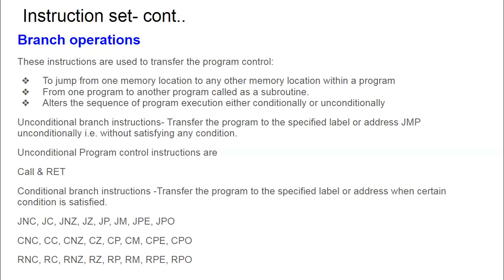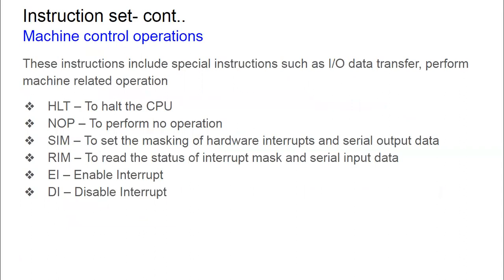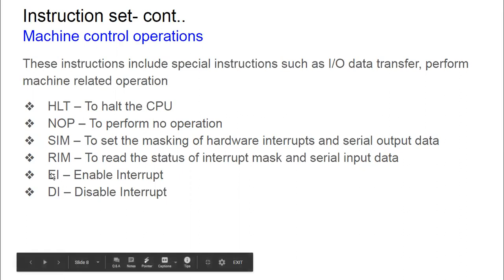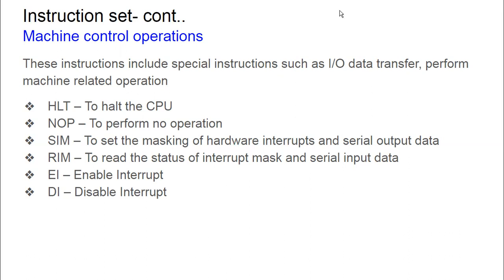Machine control operations are special instructions for machine-related operations. HLT is used to permanently stop the microprocessor. NOP performs no operation. SIM is used to set the masking of interrupts, and RIM is used for reading the interrupt status. Enable interrupt and disable interrupt instructions work together with SIM and RIM to handle interrupt operations. In the next video, we will see each and every instruction — data transfer, arithmetic, logical, branch, and machine control operations — in detail.